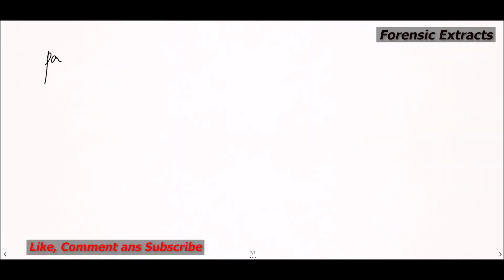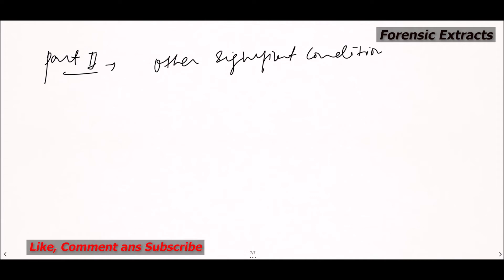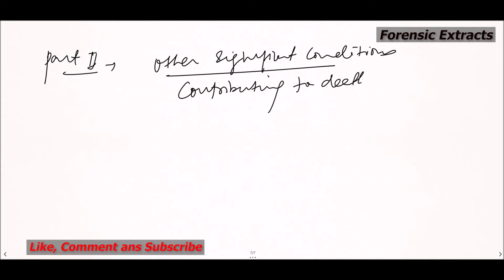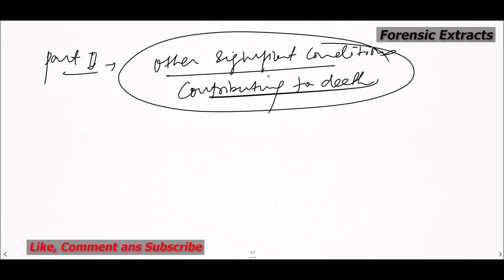Another part is Part 2, which has other significant conditions which are contributing to death. Other significant conditions contributing to death are mentioned in Part 2 of the death certificate. It is very important to write all the leading cause of death, the further chain of events, and then the contributory cause of death.